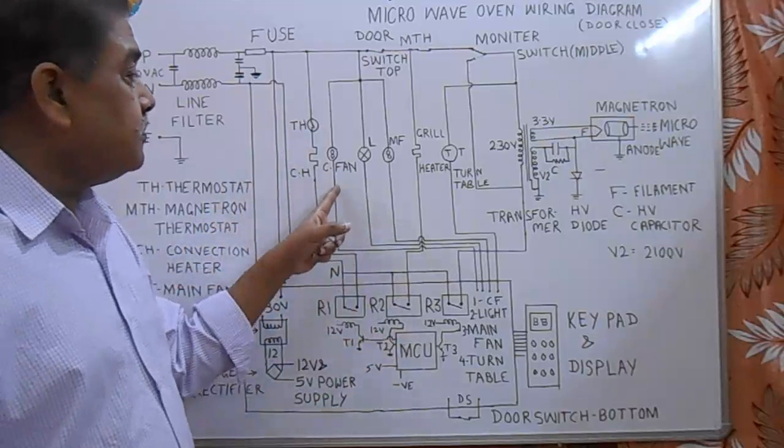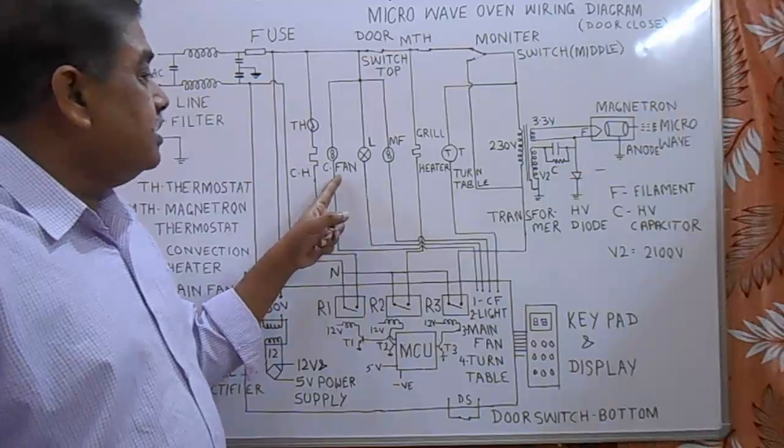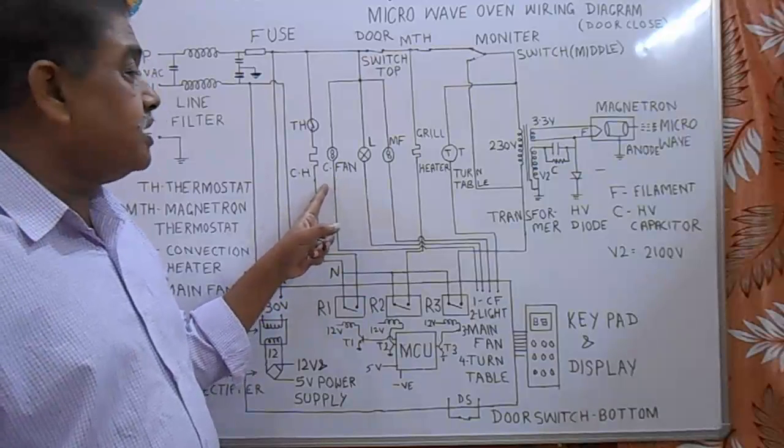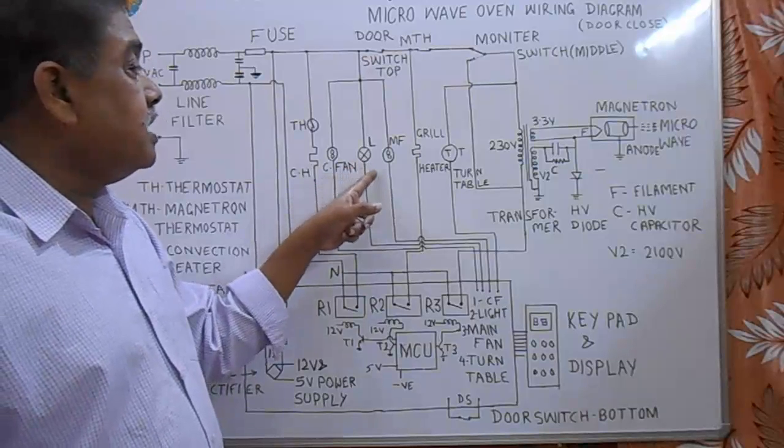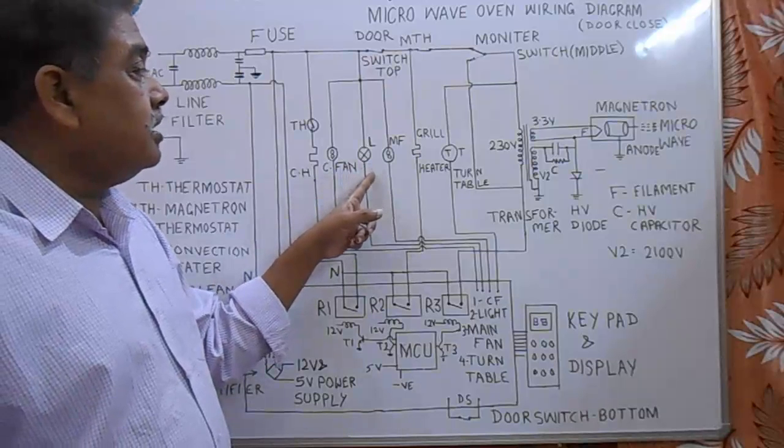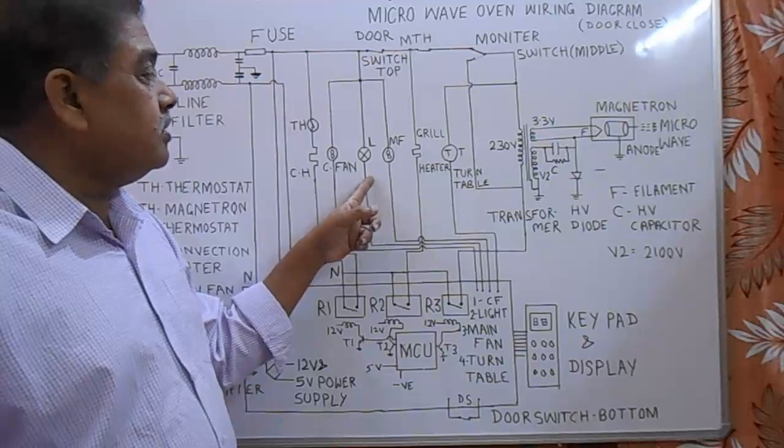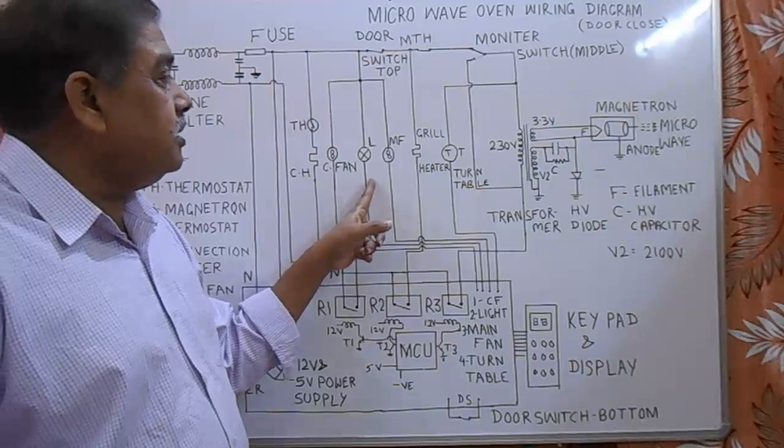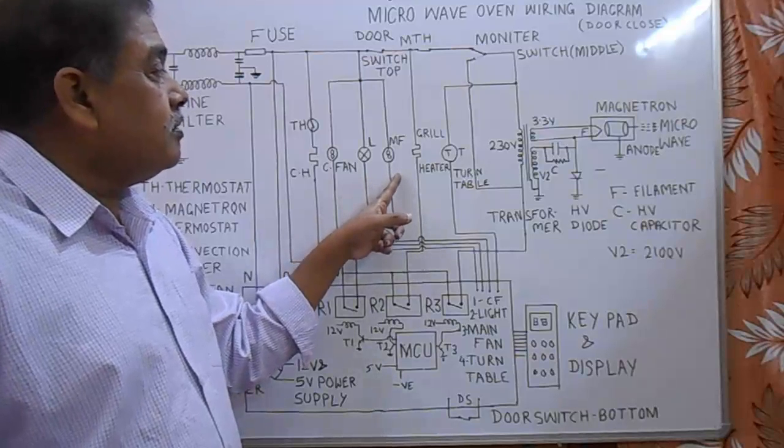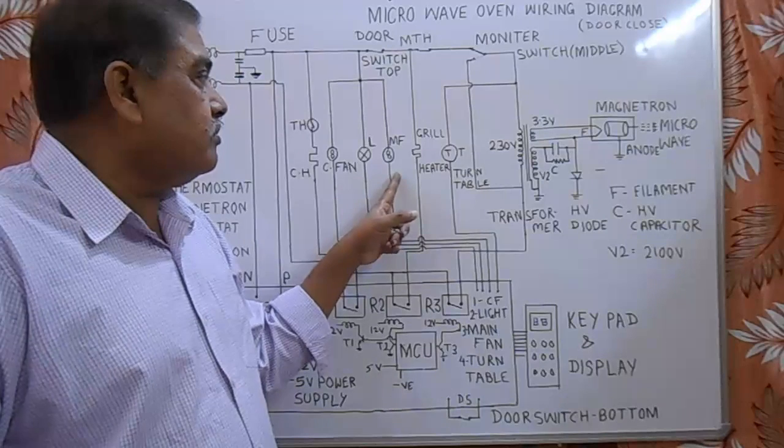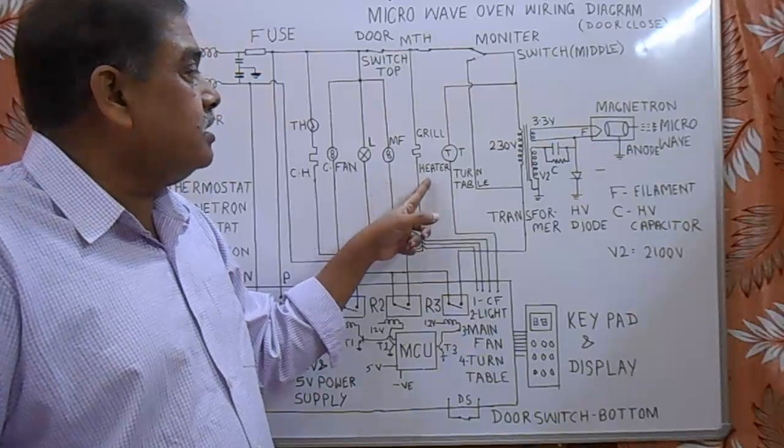Circulating fan is there. It circulates the hot air produced by convection heater. It is lamp inside the chamber. It gives illumination for seeing inside what is happening. It is main magnetron cooling fan. It is grill heater.